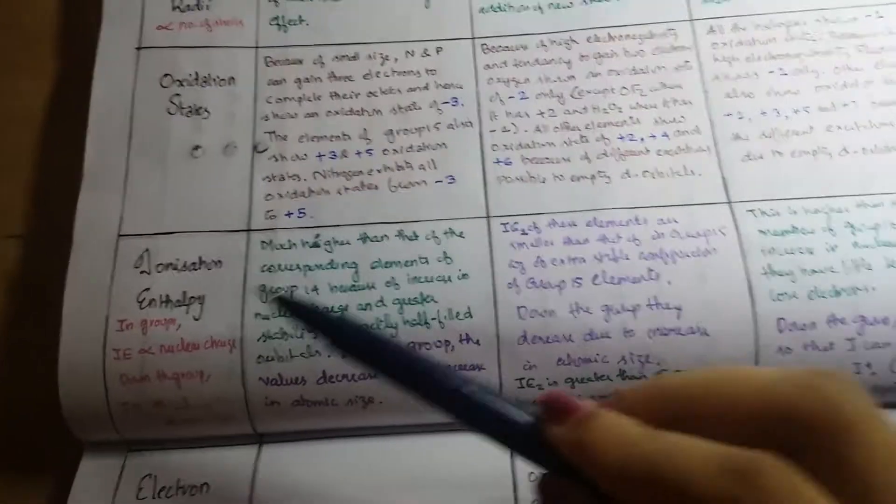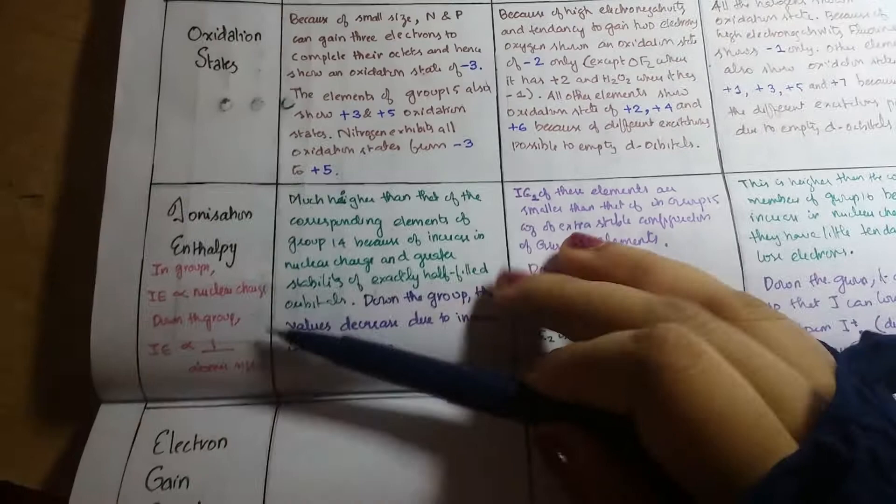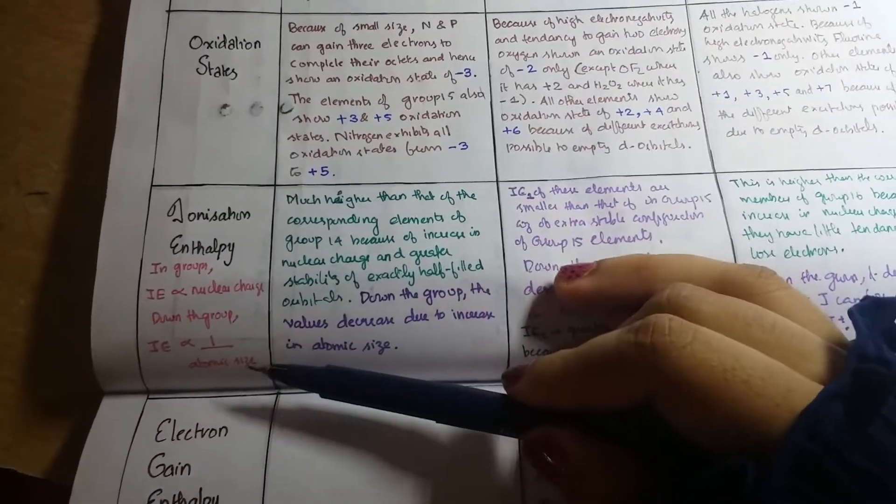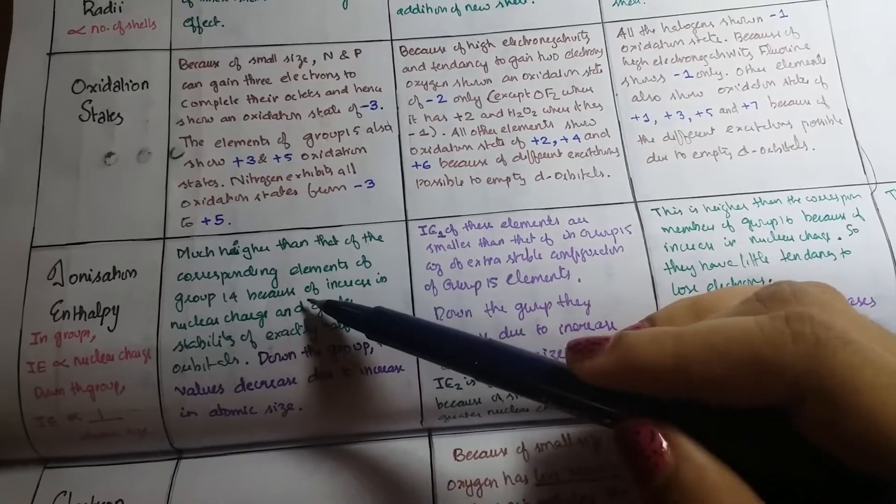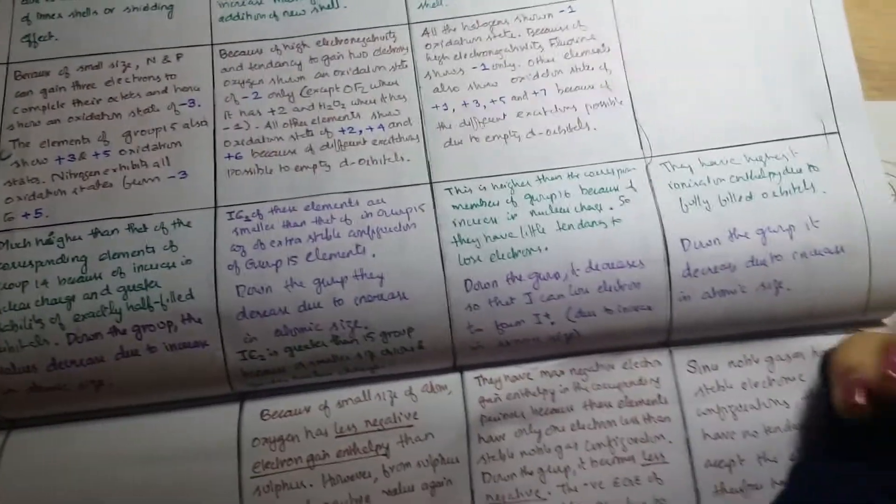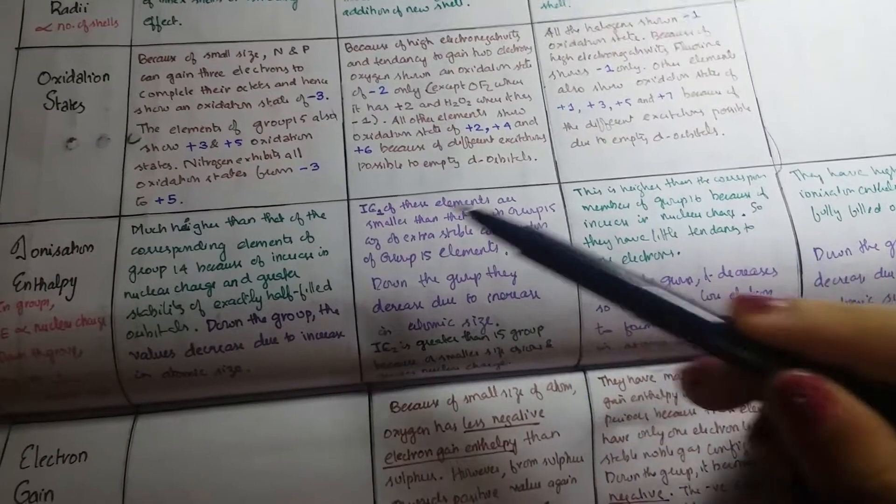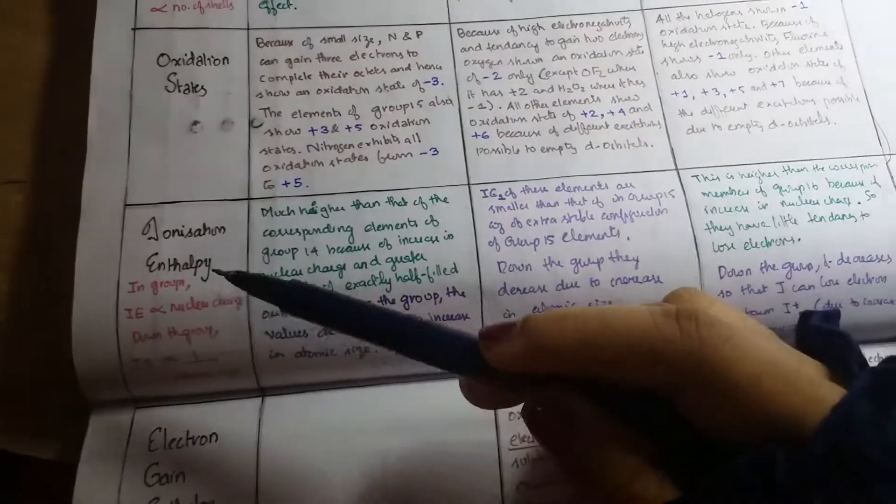Then we have ionization enthalpy. In groups, ionization enthalpy is directly proportional to nuclear charge, and down the group it is inversely proportional to atomic size. So it is much higher than that of corresponding elements of group 14 because of increase in nuclear charge, as we already said. So just have a look - the color itself tells you whether it's increasing or decreasing. I mean the color I have used, and also the reason for it is given here.